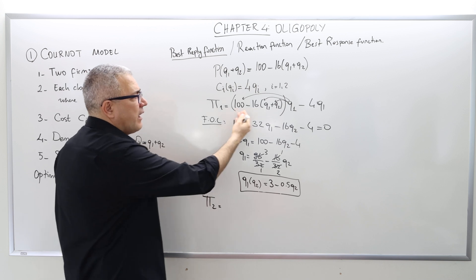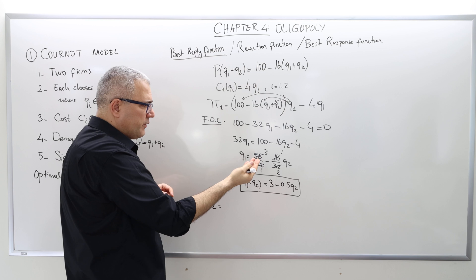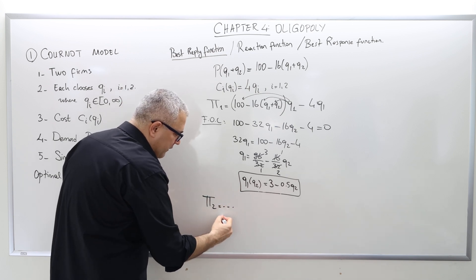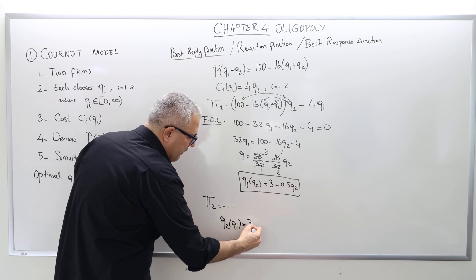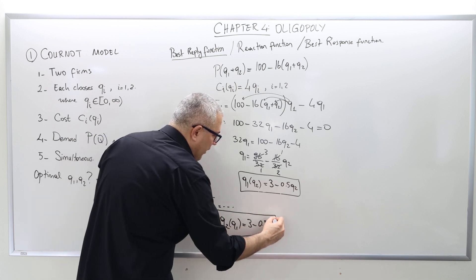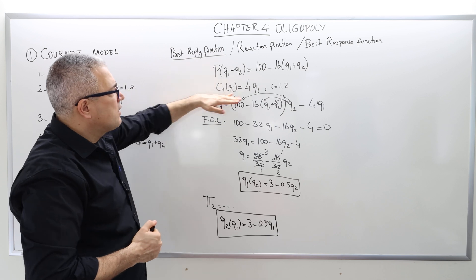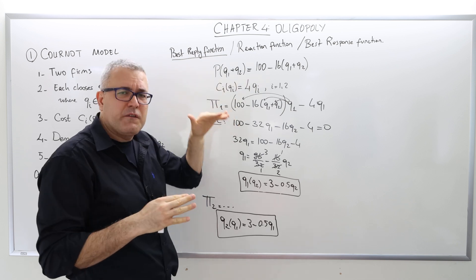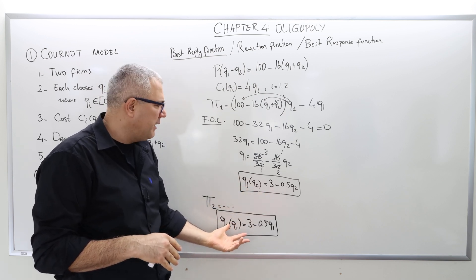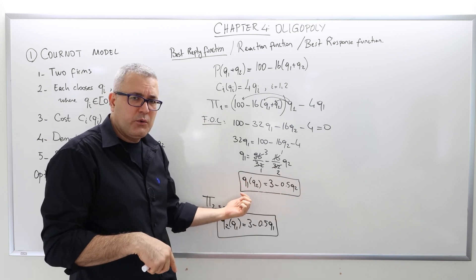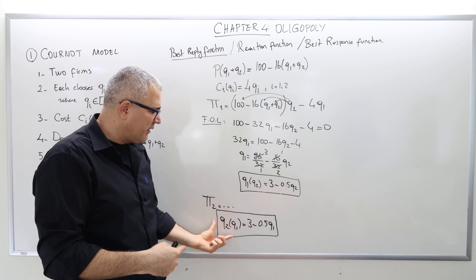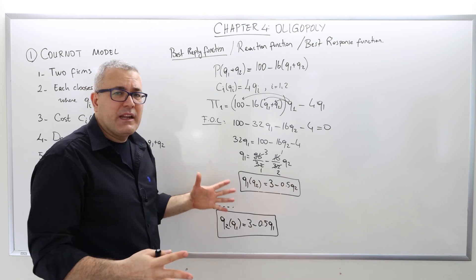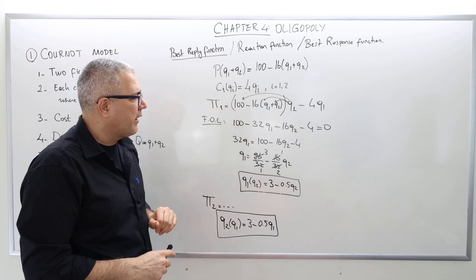We do exactly the same thing for firm two: write down the profit function pi2, take the first-order condition by differentiating with respect to q2, set it equal to zero, and solve for q2. Because the cost functions are symmetric — same marginal cost, no fixed cost — the reaction functions must also be symmetric. Wherever you see 1, replace it with 2 and vice versa, giving the reaction function for firm two as q2 equals 3 minus 0.5q1.